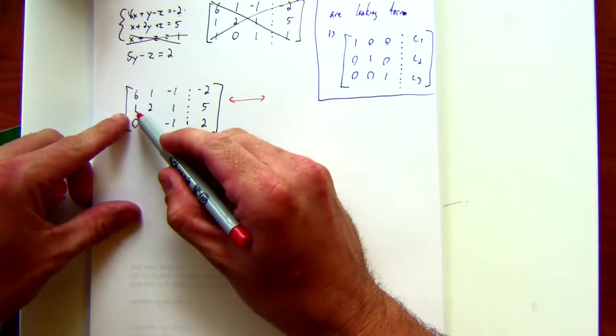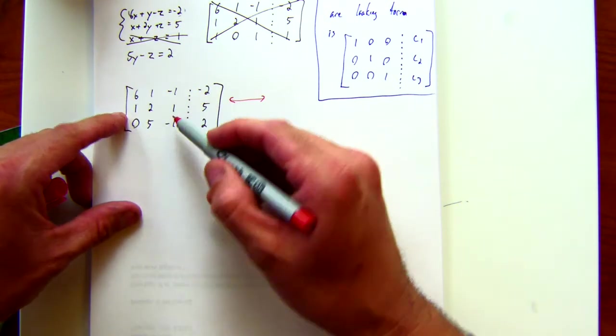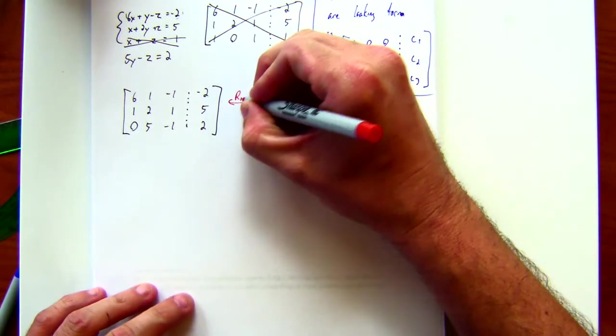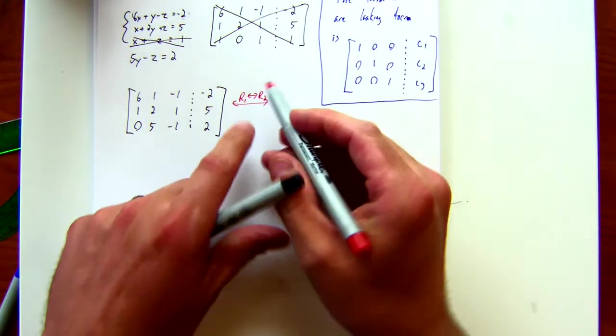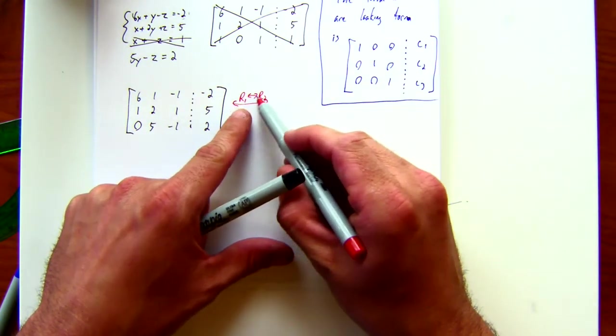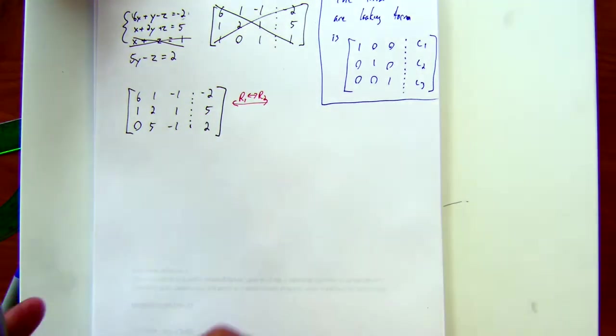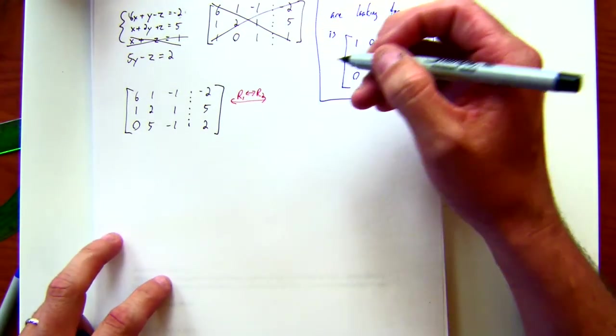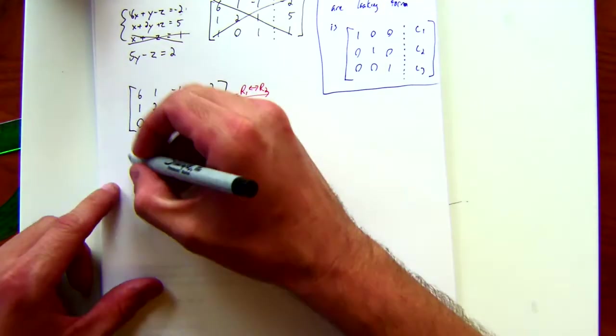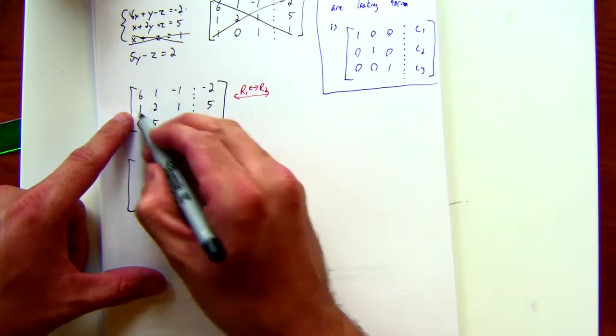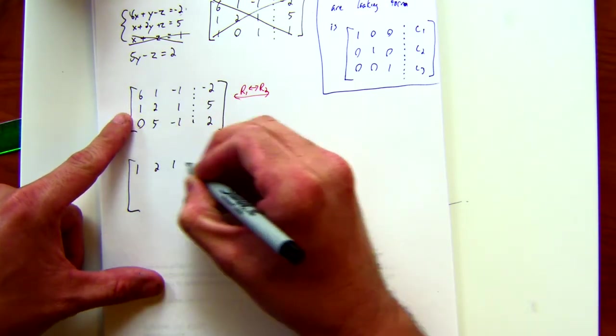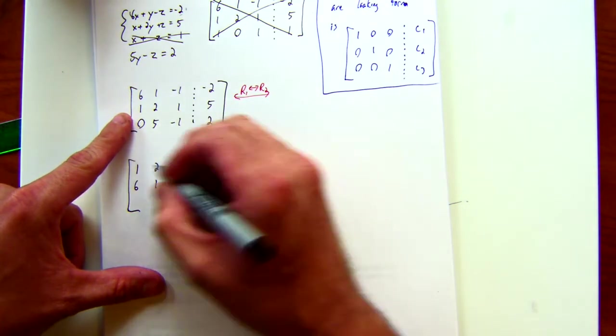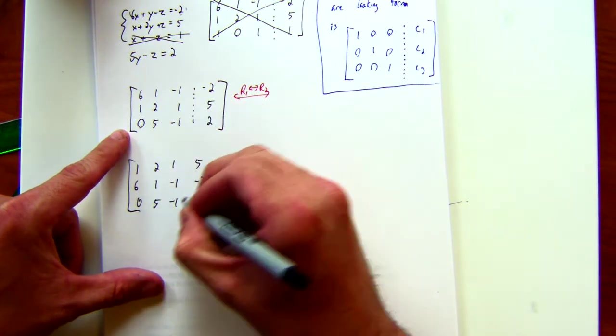So the first thing I notice is I could take this one from the second row and put it in the first row. So I'm actually, that operation is I'm interchanging row one and row two. Notice that the notation here is an arrow, double arrow, going between row one and row two. Again, you don't have to, I'm not going to grade this notation, but it might help you stay organized. I ran out of room here, so I'm going to come work down here. So all I'm going to do is write row two, write it for row one. One, two, one, five. Then I have six, one, negative one, negative two. And now I have zero, five, negative one, two.